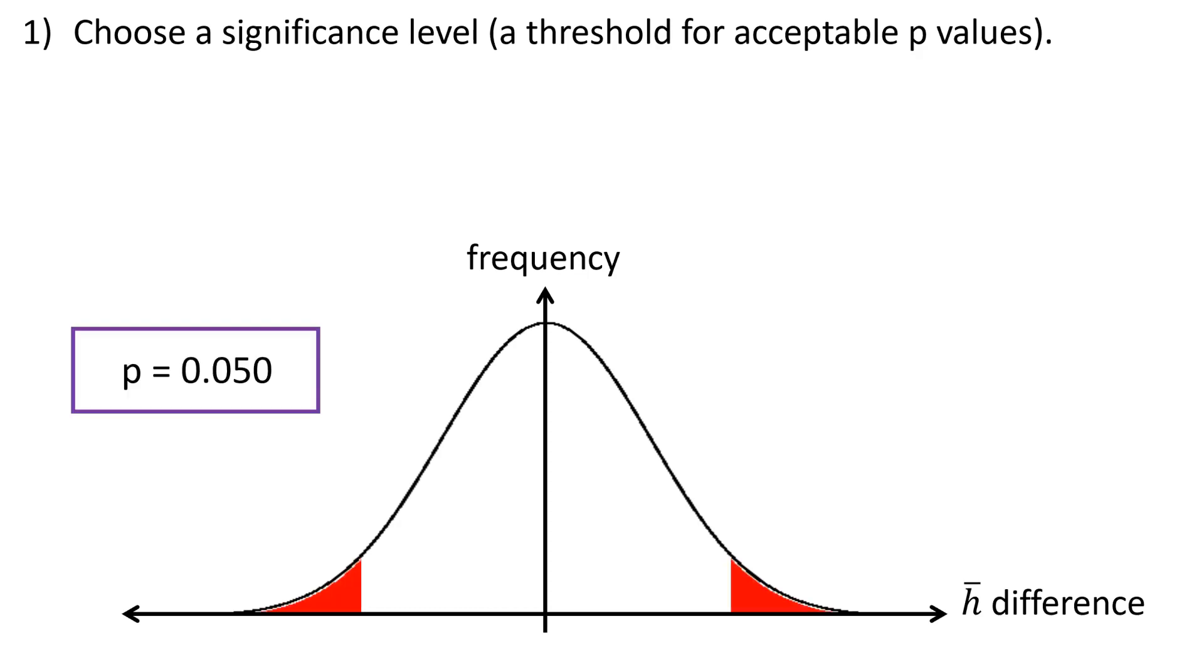Maybe you choose 0.05. You don't want to choose a threshold above that. This is really the biggest significance level that you should pick. Or, maybe you say, my p-value has to be 0.025, which means that your data has to fall in that smaller outlier region in order to reject the null hypothesis.